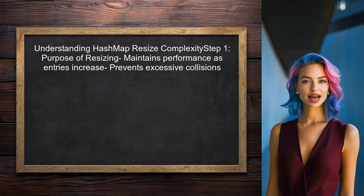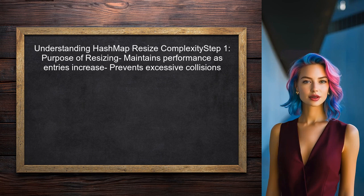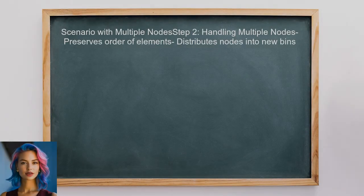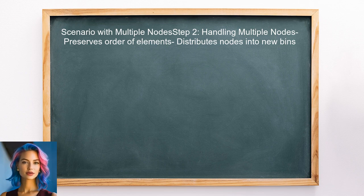To understand why the HashMap resize implementation is complex, let's first look at the purpose of the resizing process. Resizing is crucial for maintaining performance as the number of entries increases. We also need to consider the scenario where multiple nodes exist in the same bin — this is where the complexity arises. The implementation needs to preserve the order of elements while distributing them into new bins.